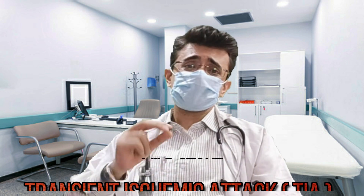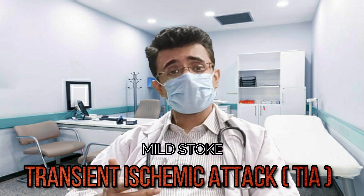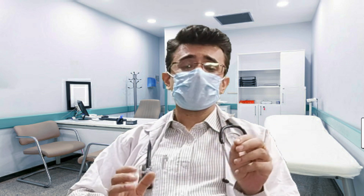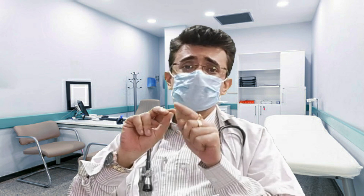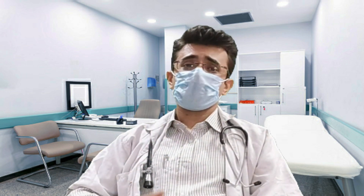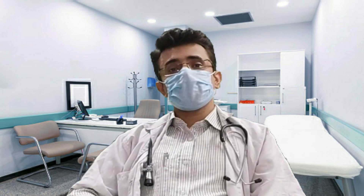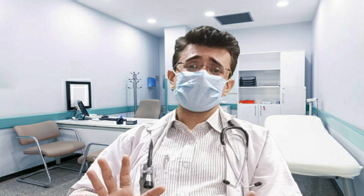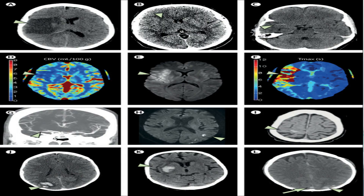A transient ischemic attack or TIA — also called a mild stroke or mini stroke — differs from major stroke because blood flow to the brain is blocked for only a short period, usually not more than 5 minutes, as a small blood clot temporarily blocks and then goes away. Most TIAs last 30 to 60 minutes, and recovery generally occurs within 24 hours without irreversible damage. However, a TIA is an important warning sign: 10–15% of people will have a major stroke within three months of a TIA.